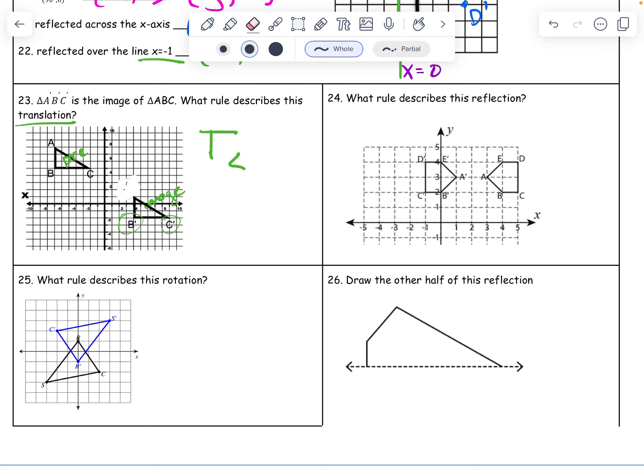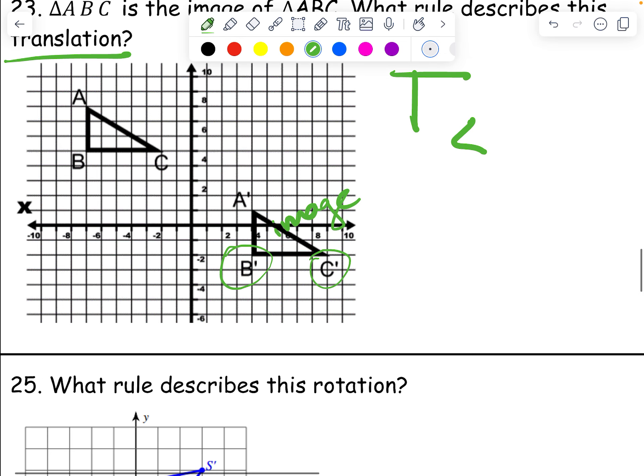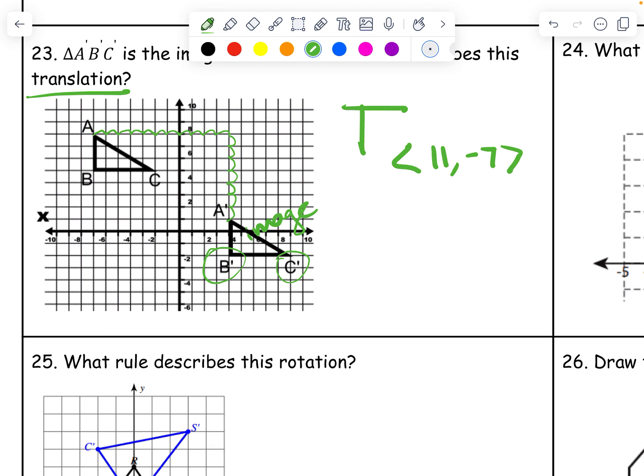Going over 11 and down 7. I chose negative 7 because it was down. Positive 11 because my X was getting bigger and my Y was getting smaller.